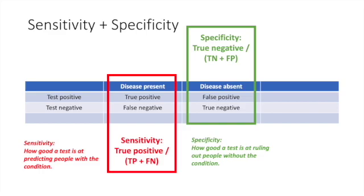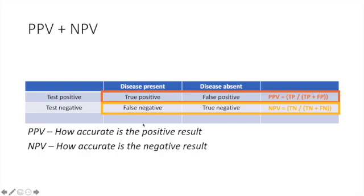Sensitivity is how good the test is at predicting people who have the condition — at picking them up. We take the true positive value and divide it by the total in the disease-present column. Specificity is how good the test is at ruling out people without the condition — take the true negative and divide by the total of the disease-absent column. Positive predictive value is how accurate a positive result is: true positive divided by the total test-positive column. Negative predictive value is the true negative divided by the total test-negative column.